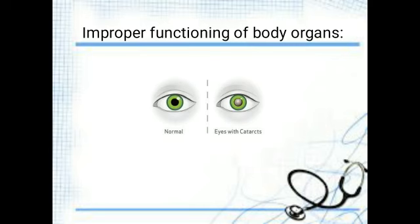Heart attack is due to improper functioning of the heart. Cataract occurs in the eye, in which a white layer is formed in the pupil of the eyeball — this is the main symptom of cataract. It mainly comes in old age people, since their body becomes weak and immunity level is also very low.